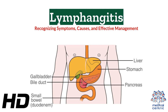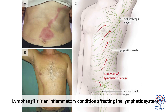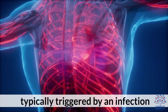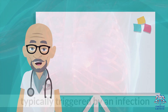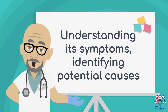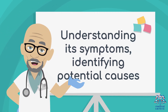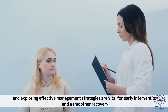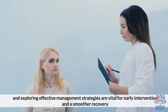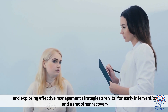Today's medical-centric topic is Lymphangitis: Recognizing Symptoms, Causes, and Effective Management. Lymphangitis is an inflammatory condition affecting the lymphatic system, typically triggered by an infection. Understanding its symptoms, identifying potential causes, and exploring effective management strategies are vital for early intervention and a smoother recovery.